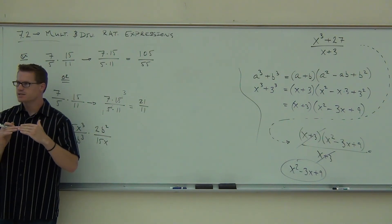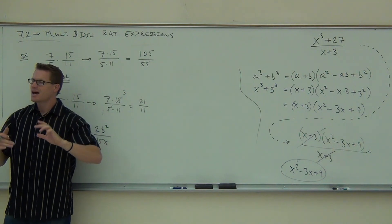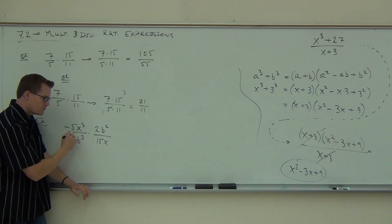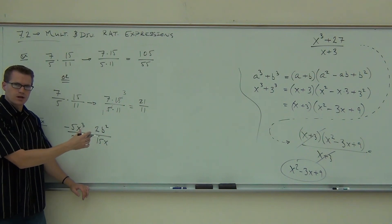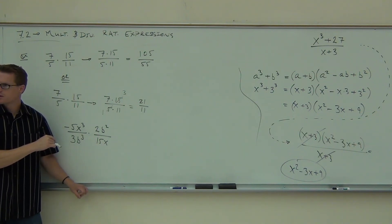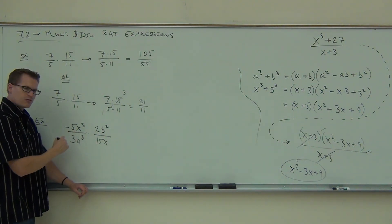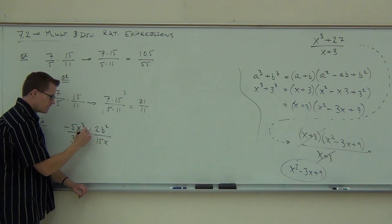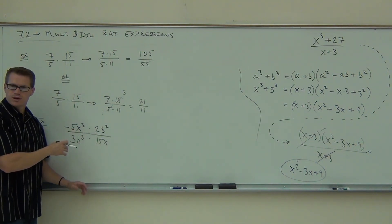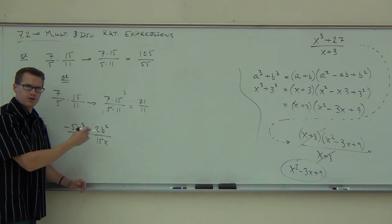I need to see that for a couple of reasons. First, I need to see that you know we multiply straight across and get one fraction — numerator and denominator — before we simplify. Second, I can't allow you to do this across addition or subtraction, because it just flat out doesn't work. If you can make this into one fraction, I know you understand we can't simplify across addition and subtraction. You can rewrite the problem, or just extend that line and put the dot and the dot — that makes this into one fraction.